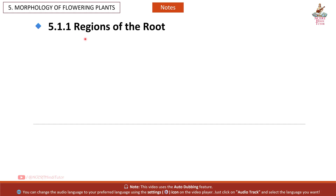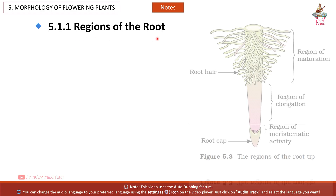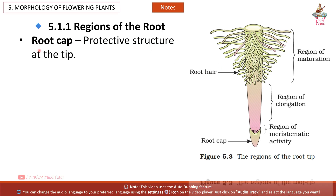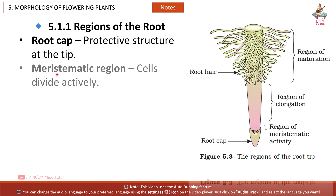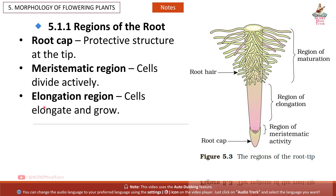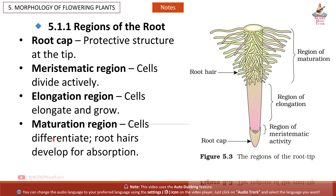5.1.1 Regions of the root: Root cap — protective structure at the tip. Meristematic region — cells divide actively. Elongation region — cells elongate and grow. Maturation region — cells differentiate and root hairs develop for absorption.